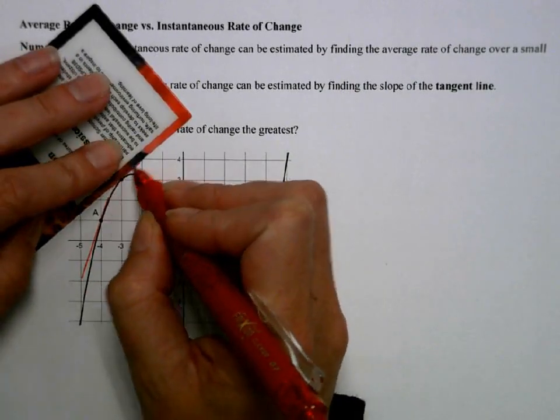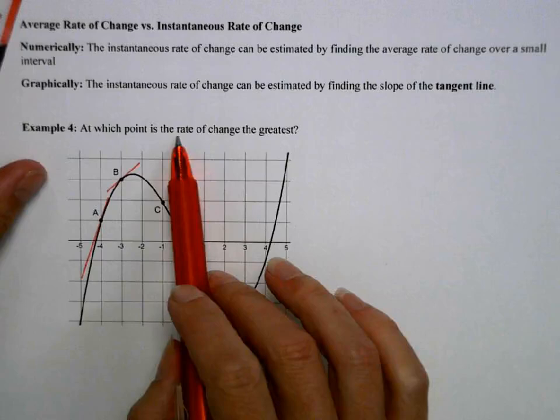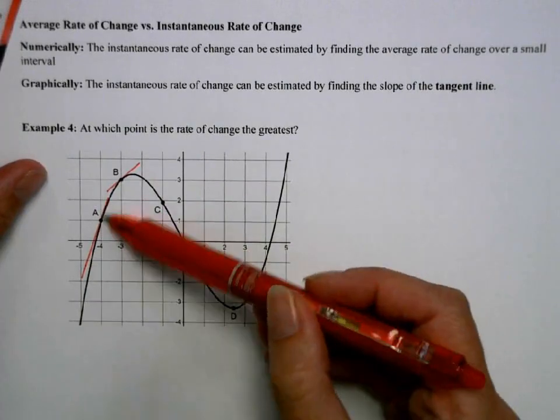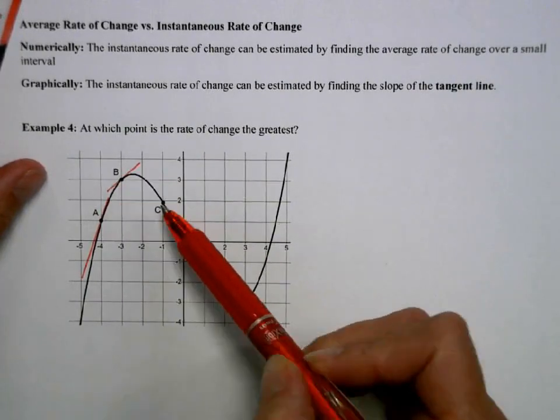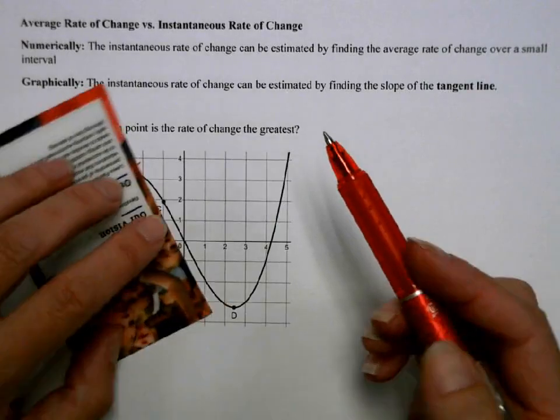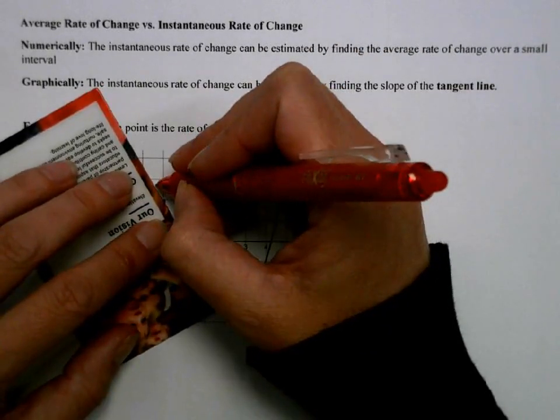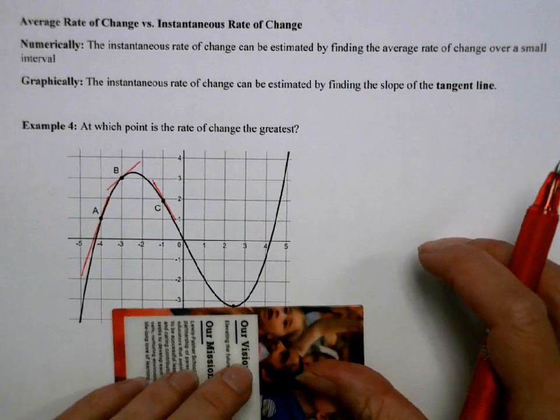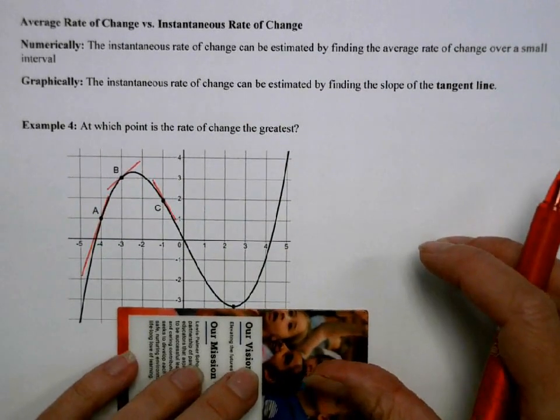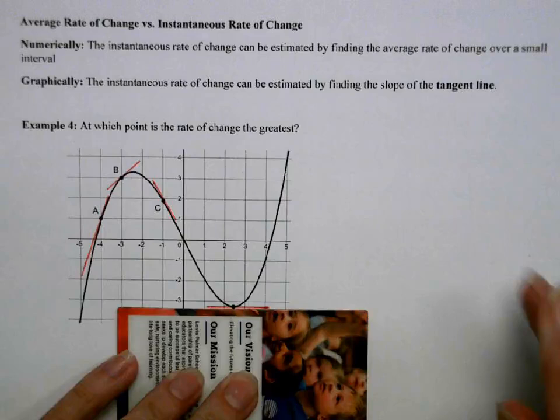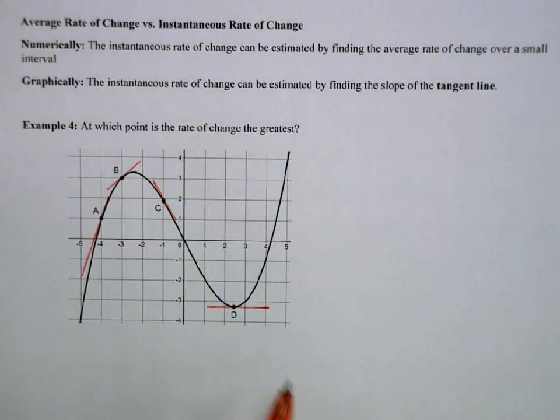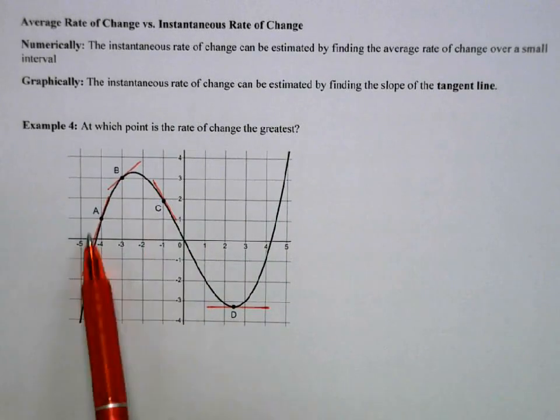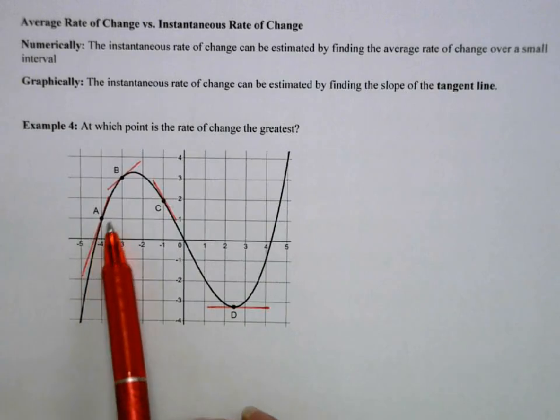B is a little bit less. So it says at which point is the rate of change the greatest? So we have this one. This one's a little bit less. At C here, that's what my tangent line would look like. And then D, down at our minimum, which we'll learn about later, my slope would be 0. So here, I've got a 0 slope, a negative slope, two positive slopes. But my biggest positive slope is going to be at point A.